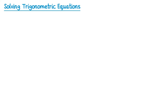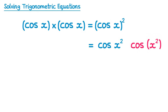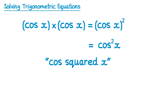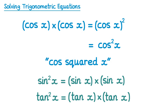Before we look at our final type of equation, we need to learn some new notation. If you take cos x and multiply it by another cos x, it's the same as cos x squared. We write this as cos squared x — moving the squared so it reads 'cos squared x' — meaning do cos x and then square the result. You can also have sine squared x, which is sine x times sine x, and tan squared x, which is tan x times tan x.